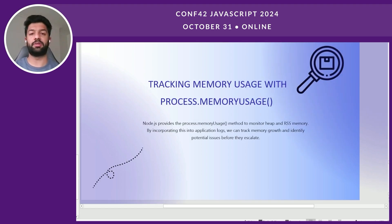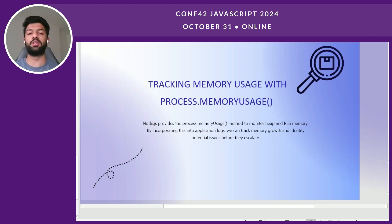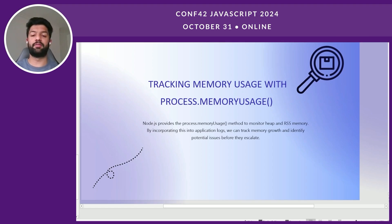There is a built-in method in Node.js called process.memoryUsage() that helps monitor heap and RSS memory. RSS — Resident Set Size — keeps the footprint of the application, showing how the application behaves before and after the execution of functions, queries, or database requests. By examining the logs from this method we can track any memory growth and identify if any function is causing a memory leak before it escalates.